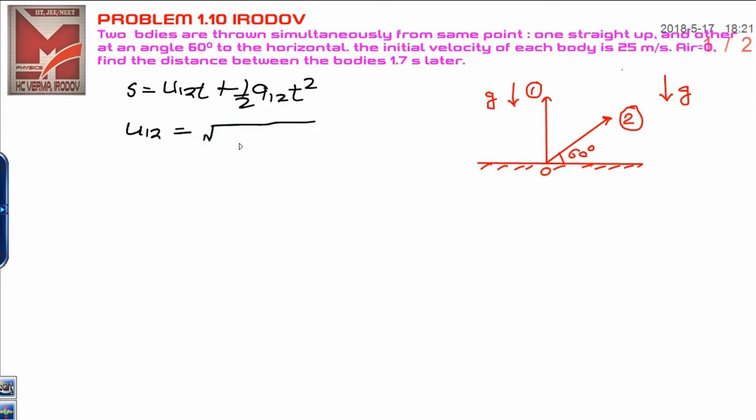That is 25 m/s for each. Using the parallelogram law, this becomes √(25² + 25² - 2(25)(25)cos θ), where this angle is 90° minus 60°, which equals 30 degrees.